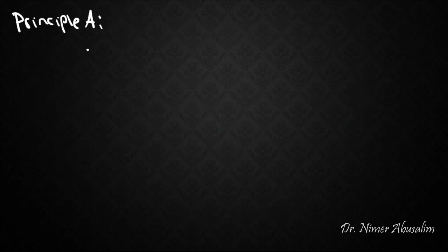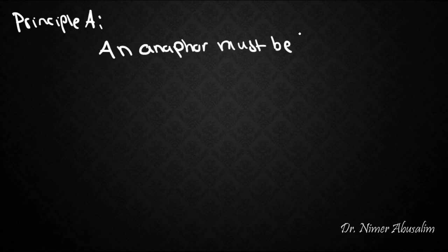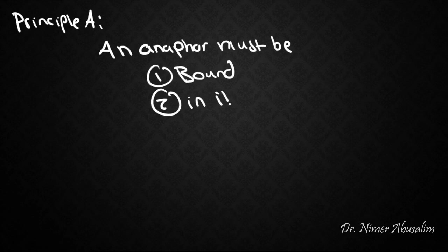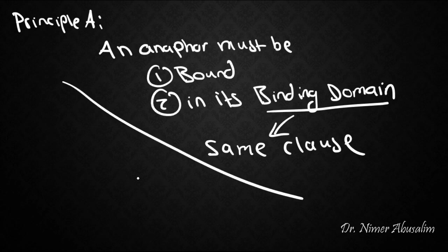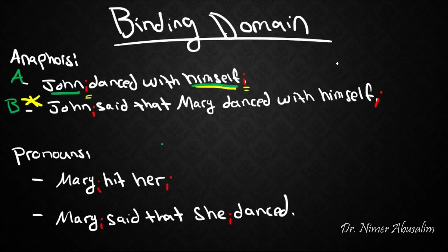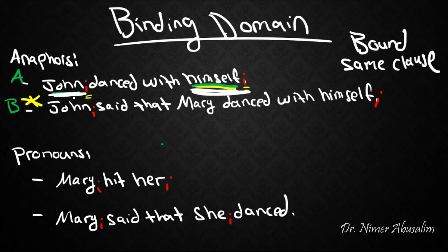Let's modify Principle A: an anaphor must be (1) bound, and (2) in its binding domain — where the binding domain is the same clause. In the first sentence, 'himself' and its antecedent John are in the same clause. We ask: is 'himself' bound by John? Yes, so everything is good.